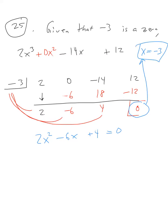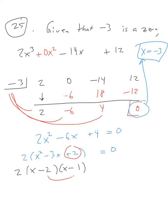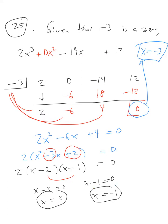To find the remaining zeros, factor 2x² minus 6x plus 4. Factor out the greatest common factor of 2 to get 2(x² minus 3x plus 2). Then find two numbers that multiply to 2 and add to negative 3: those are negative 2 and negative 1. Factoring gives 2(x minus 2)(x minus 1), so x equals 2 and x equals 1. Wait — solving each factor set to zero: x minus 2 = 0 gives x = 2, and x minus 1 = 0 gives x = 1. Combined with the first zero, the three answers are x equals negative 3, x equals negative 1, and x equals positive 2.